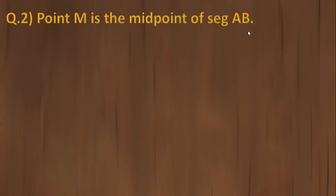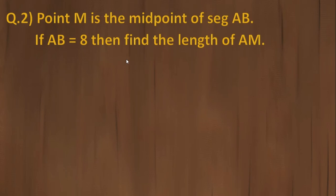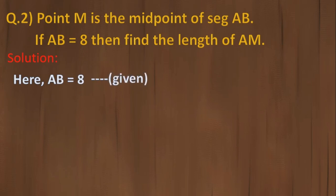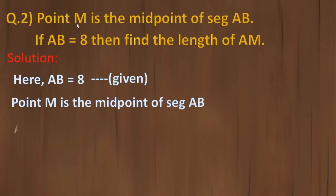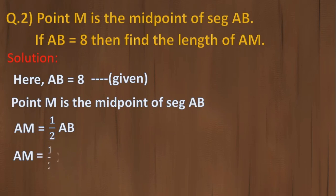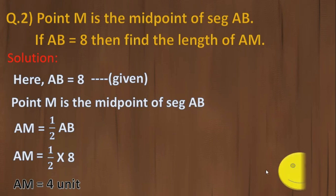Question 2: Point M is the midpoint of segment AB, AB is given as 8. Find the length of AM. In the solution, let's draw a figure: segment AB with point M in the middle. If M is the midpoint, then AM should be half of AB. So AM equals half of AB: 1 upon 2 multiplied by 8 equals 4. Therefore AM equals 4 units.